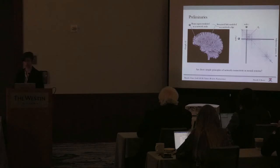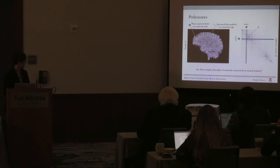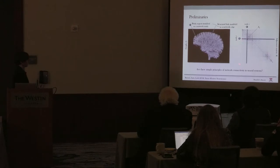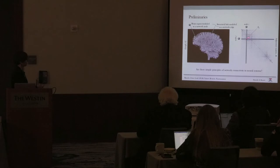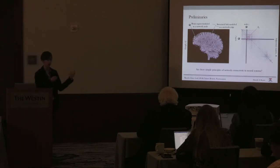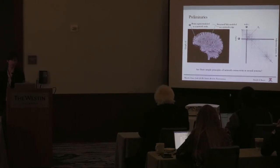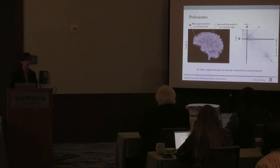As a few preliminaries before we get into some of the data, I'm going to be treating each of these species, or the connectomes of each of these species, as a network. I'm going to be showing you a couple of different adjacency matrices — n by n matrices where every element tells you the strength of connectivity between region i and region j, or node i and node j. One of the fundamental questions is: what are the simple principles of network connectivity across different neural systems?